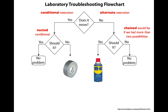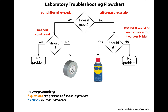An example of a chained conditional would be: what color is your car? It could be blue, black, red, or any other favorite color of yours. In the world of programming, questions are phrased as boolean expressions. So you're going to replace yes and no with boolean values of true and false, and the actions are represented using lines of code.